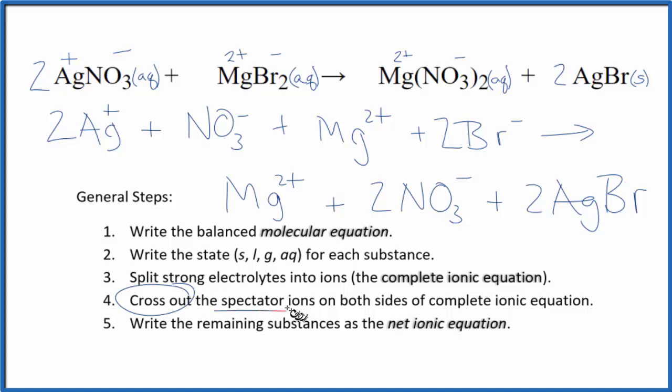Now we can cross out the spectator ions. They're on both sides of that complete ionic equation. They really haven't changed. They're the same at the start as they are at the finish. And so I can see there's a problem here. I have NO3 minus here and then two of them. And when I look back at the equation, this coefficient here too,